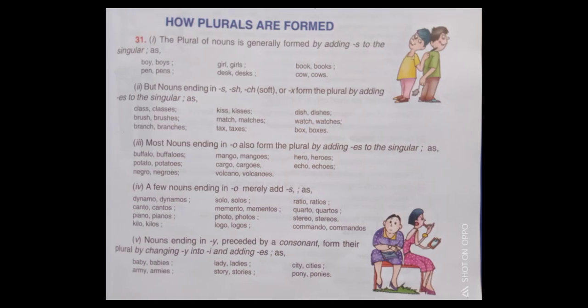How plurals are formed. The plural of nouns is generally formed by adding S to the singular, as: boy, boys; pen, pens; girl, girls; day, days; book, books; cow, cows.